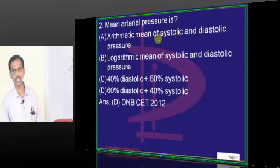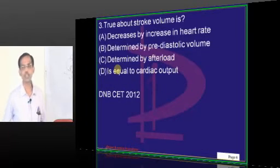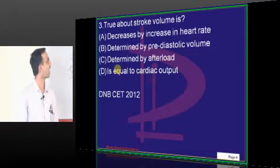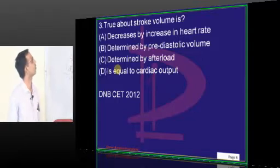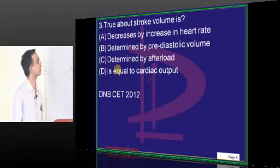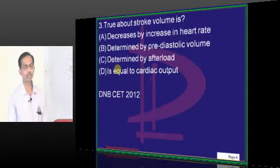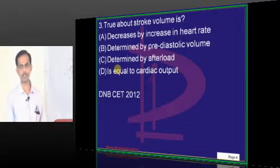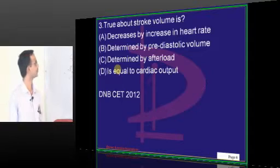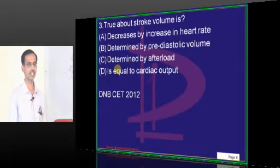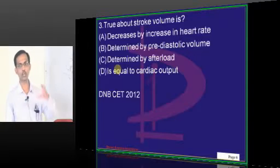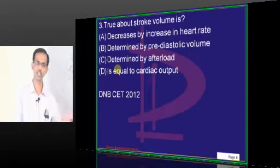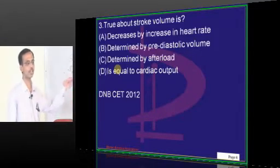It is not arithmetic mean and not logarithmic mean either. True about stroke volume: decreased by increase in heart rate; determined by pre-diastolic volume; determined by afterload; equals cardiac output. Stroke volume cannot equal cardiac output — stroke volume times heart rate is cardiac output. Stroke volume is the volume ejected per beat. The fraction of end diastolic volume ejected is the ejection fraction, and stroke volume times heart rate gives cardiac output.